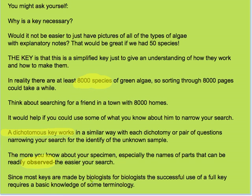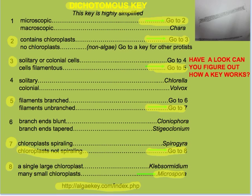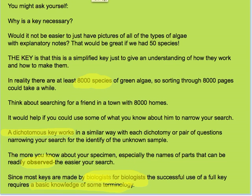Keys are usually made by biologists for biologists, so in the real world of biology it's definitely an asset if you have basic knowledge of some of the terms used in the key — like microscopic and macroscopic, what chloroplasts are, what filamentous means, and what solitary and colonial mean. A basic understanding of the structure of what you're looking at is certainly helpful, because ultimately to identify something we have to work with things that are easy to observe.